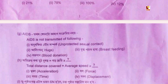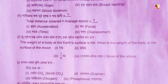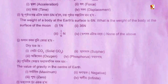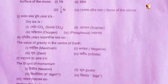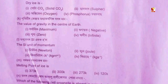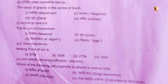Question 8: Next question. Question 6: The value of gravity at the center of the Earth. Option — the unit of momentum. Question: Melting point of ice. Options: 373K, 300K, 273K, 120K. Question: Which of the following cells is absent in an animal cell? Option: plastid.